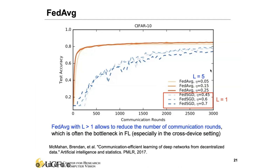With small local training (L=1), you need many more communication rounds to reach 80% accuracy. FedAvg with more local training rounds converges much faster, which is beneficial in federated learning due to limitations in internet connection, bandwidth, and latency. We want the model to converge faster with less communication, which may satisfy the requirements of many applications.